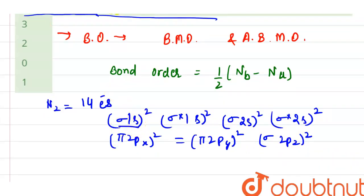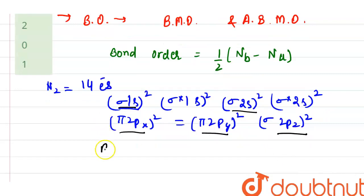Sigma 1s², sigma 2s², pi 2px², pi 2py², sigma 2pz² - these represent the bonding molecular orbitals. And sigma star 1s², sigma star 2s² - these represent the anti-bonding molecular orbitals.